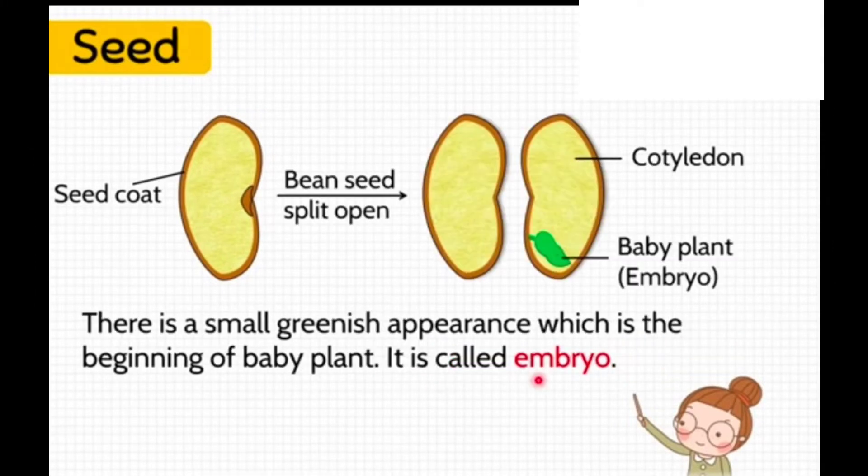Now we will learn about the embryo. There is a small greenish structure which is the beginning of a baby plant — this is called the embryo.